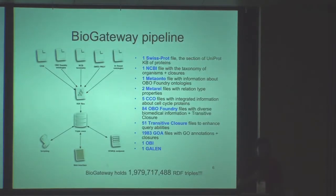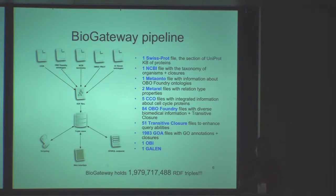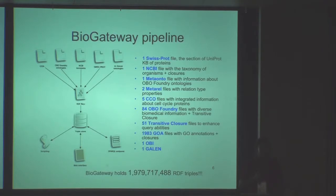To build BioGateway, we constructed a semi-automated pipeline that gathers information from several sources. One of the main components is SwissProt for obvious reasons — it's curated data. There is also information about taxonomy. We are also collecting the entire set of gene foundational ontologies, and we are making use of transitive closure to exploit some basic reasoning on this knowledge base.